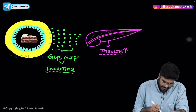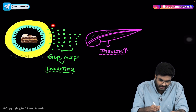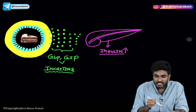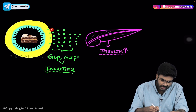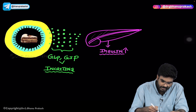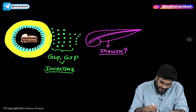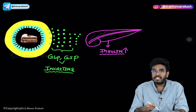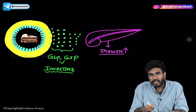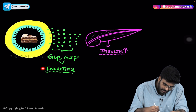Whenever you eat food, your GIT — the wall of the GIT specifically — is going to produce certain chemicals. What are these chemicals? Something like GLP, glucagon-like peptide, and gastric inhibitory peptide. Glucagon-like peptide and gastric inhibitory peptides are the ones coming from the wall of the GIT, and these substances are called incretins.